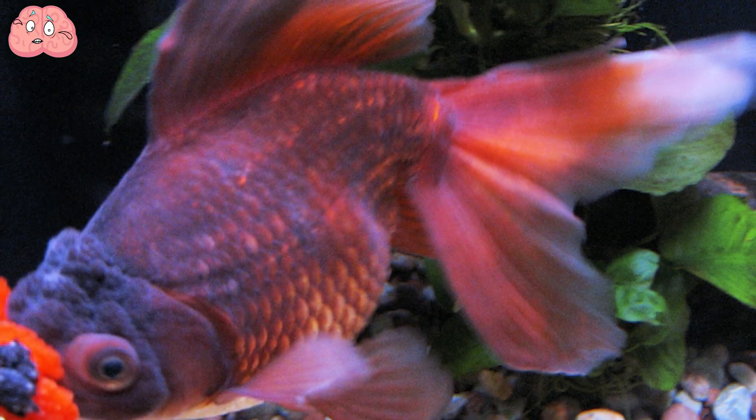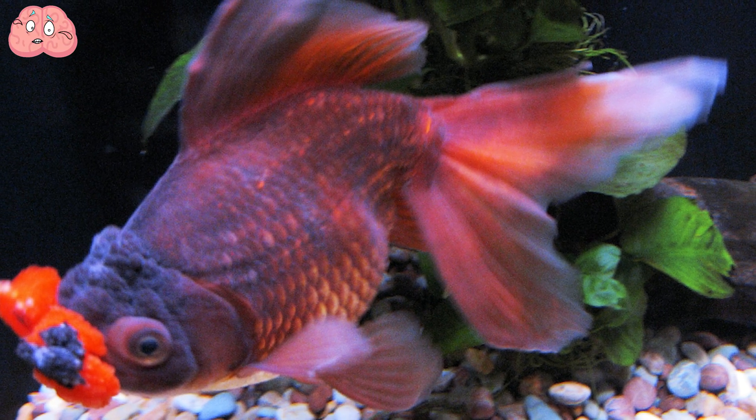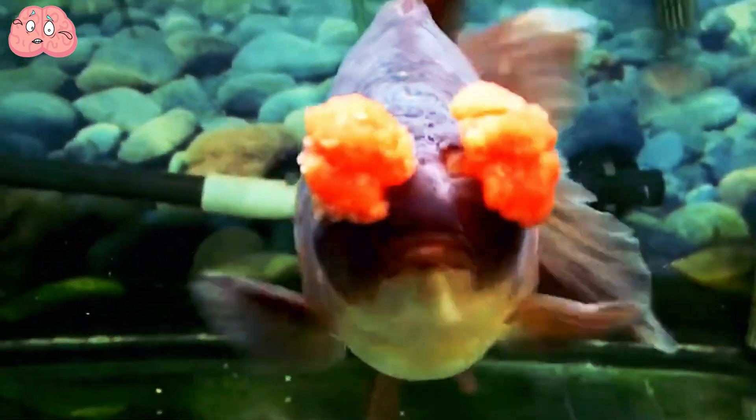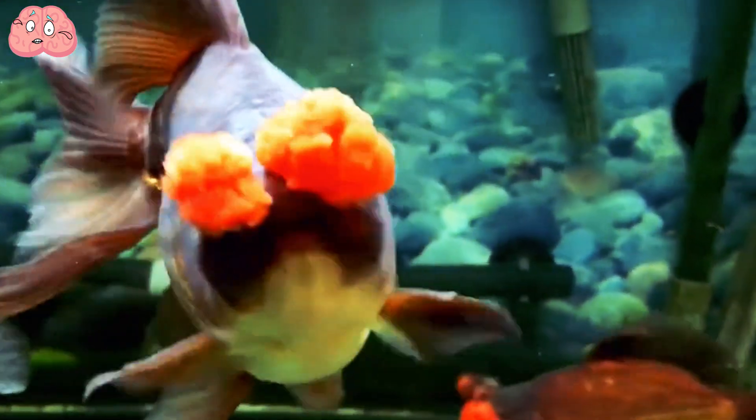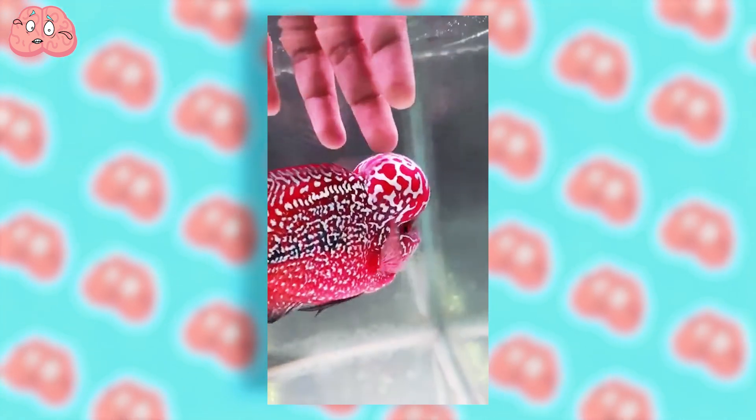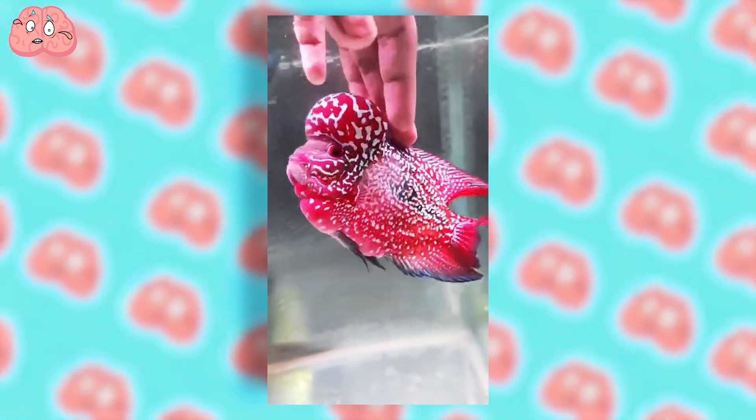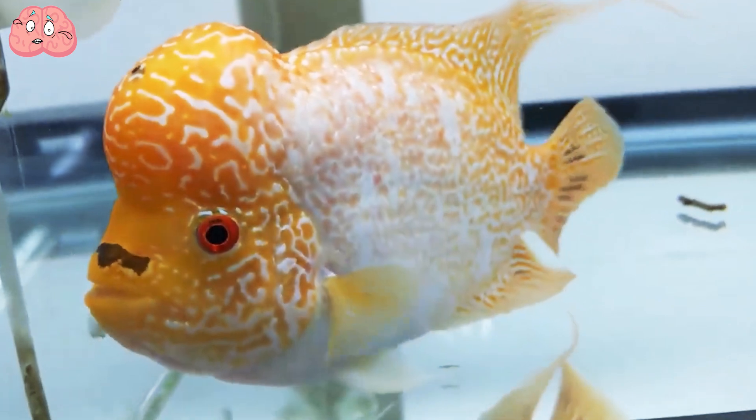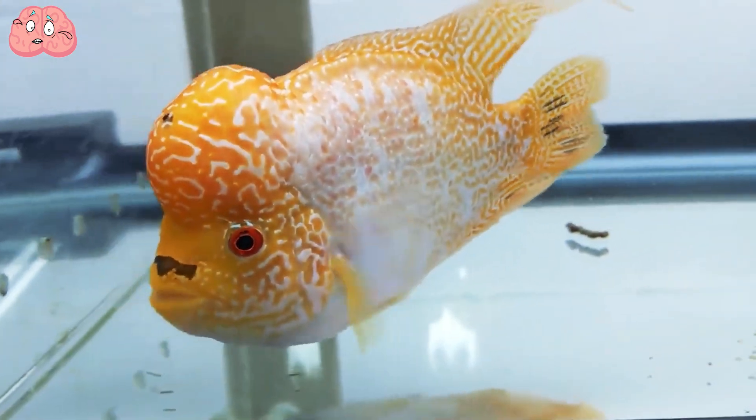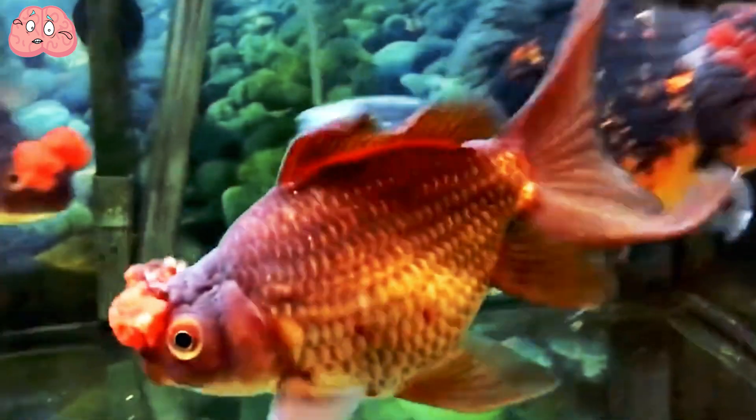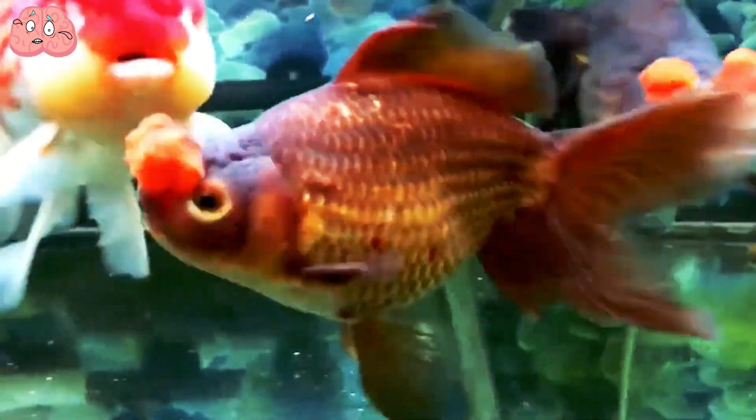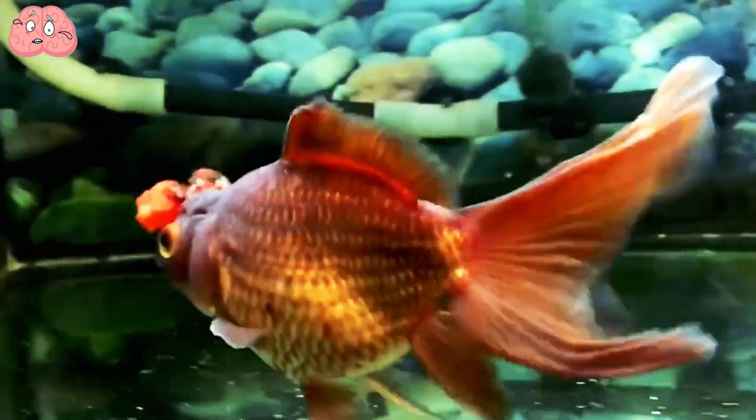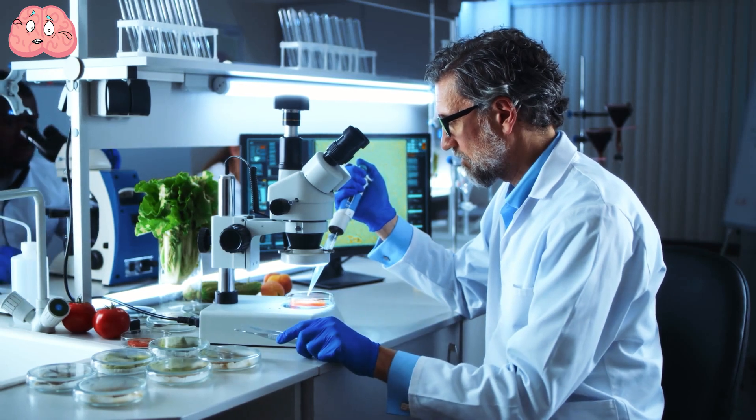The artificial growth of these outgrowths can pose risks to the fish's well-being. In the case of flowerhorn cichlids, it limits their vision, making it challenging for them to thrive. In the case of pom-pom goldfish, the outgrowth can grow to a size that interferes with the fish's ability to eat. However, scientists and breeders continue to produce and sell these fish because they are considered lucky symbols in some Asian regions, fetching high prices.